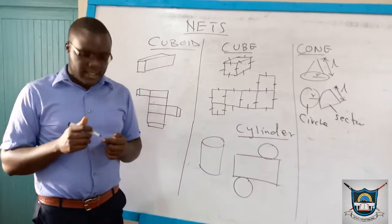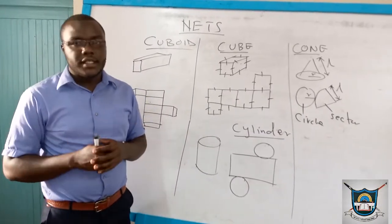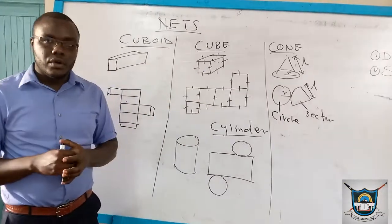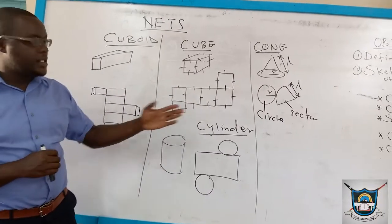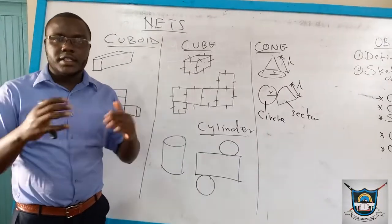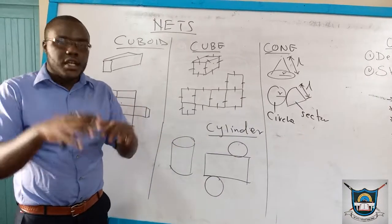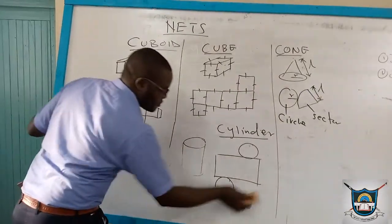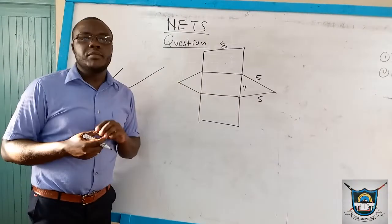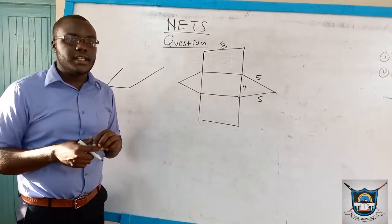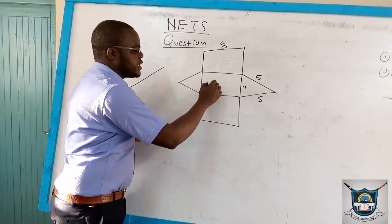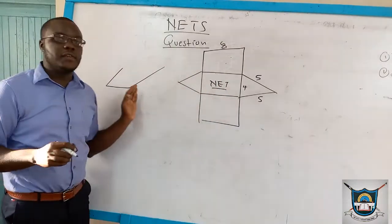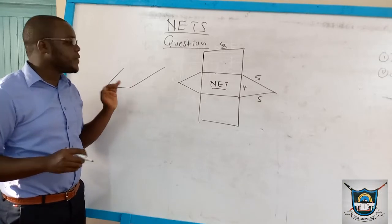The topic is not much tested in the KCSE. In fact, in the KCSE, they might give you the solid itself or the sketch, and your work is to complete it so that you can make the shape or the solid from which it creates. This is an example of a question you can find in the KCSE where they give you the net and your work is to use the net to make the solid or the 3D figure that is formed.